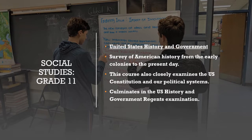United States History and Government in 11th grade is a survey course — a snapshot of all American history from the early colonial period up to the present day. The course goes through various constitutional principles and how all of that history influences us today. This also culminates in a U.S. History and Government Regents examination, comparable to the 10th grade Regents exam.